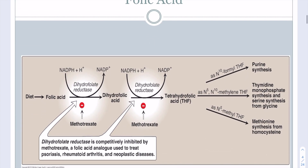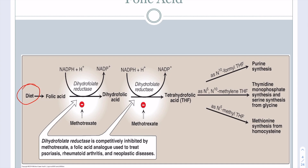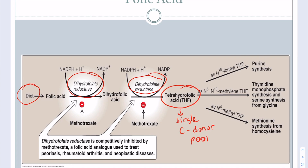Folic acid from the diet undergoes two reactions via dihydrofolate reductase to generate our tetrahydrofolate pool. This is a single-carbon donor pool with different varieties of tetrahydrofolates. These are important for purine synthesis, for generation of non-essential amino acids such as serine, and for recycling methionine from homocysteine.